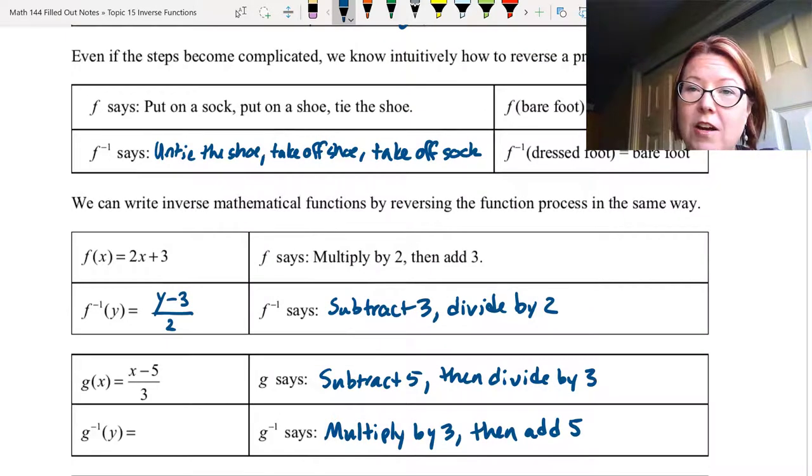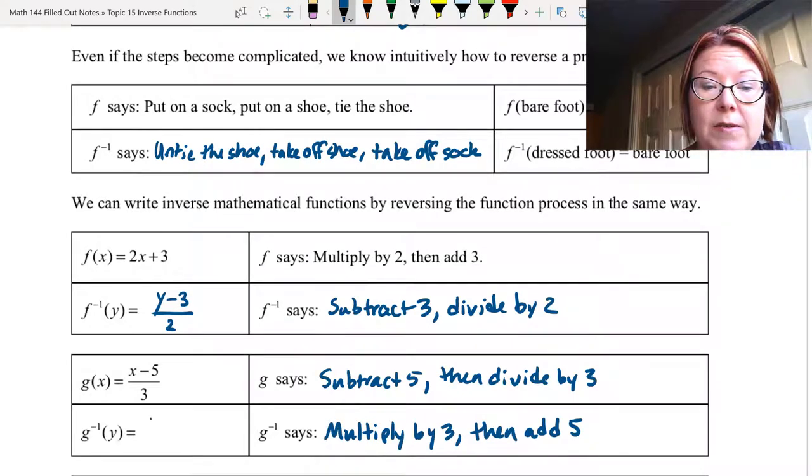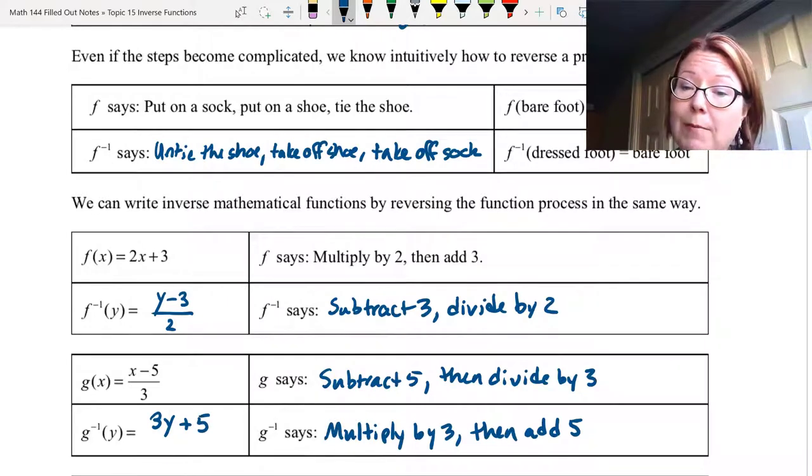Now g negative 1 of y, or g inverse of y, would be written as y times 3, because we're multiplying by 3 first, then adding 5. So 3y plus 5.